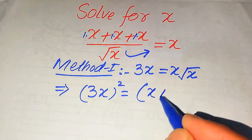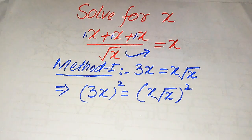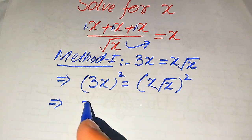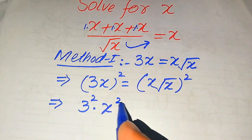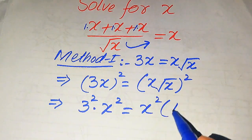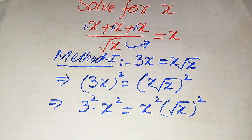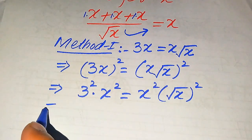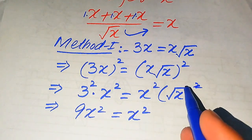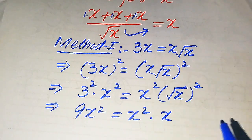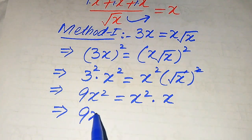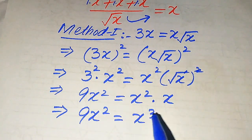When we take squaring on both sides it will be written as 3x whole square equals x times square root of x, whole square. In the next step we apply this square separately on both values, and it will be written as 3 squared multiplied by x squared equals x squared into square root of x, whole square. So 3 squared becomes 9 times x squared, and the square and the square root cancel so we get x only, giving us 9x squared equals x cubed.